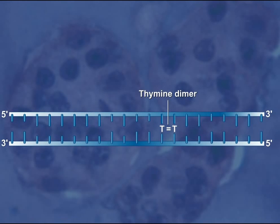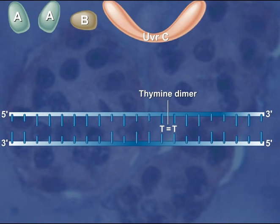The nucleotide excision repair process uses a set of proteins called UV-R-A, UV-R-B, UV-R-C, and UV-R-D.